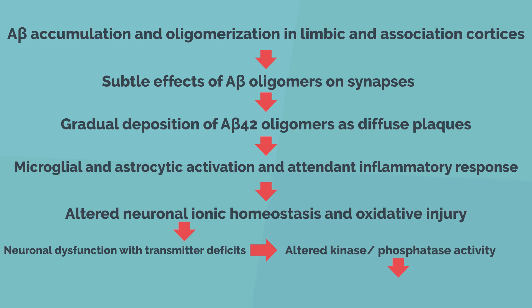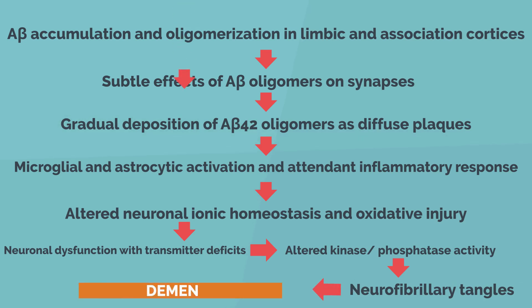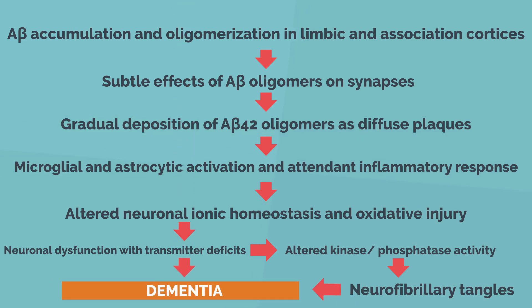Thus, increased amyloid beta level eventually leads to the onset of dementia. Amyloid deposition observed in amyloid PET is a prerequisite for Alzheimer's disease diagnosis and leads to early diagnosis.